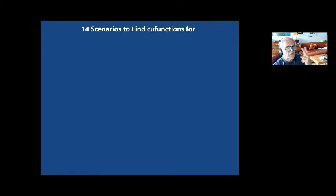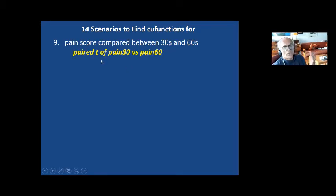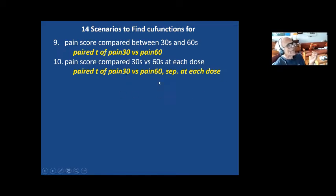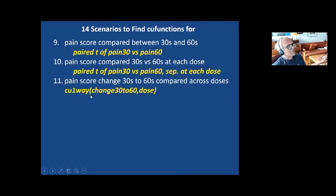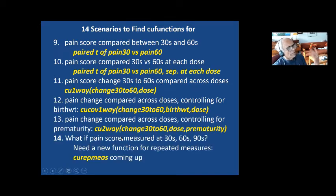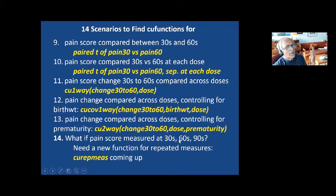Suppose you have two measurements in each child — 30 seconds and 60 seconds. If you want to compare the two, you do a paired T. But suppose you want to compare that with dose as a factor — then you do a one-way of the change with dose, using change from 30 to 60 seconds as your outcome variable, like we did in the diet study. And suppose you had three measurements — then you may need to do repeated measures. That's what we're going to get to next.